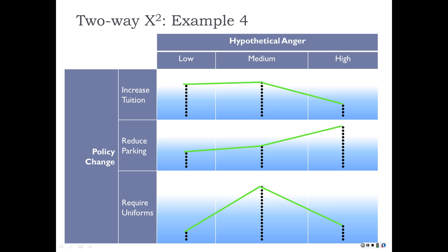The students' hypothetical anger is associated with the policy change being suggested. If there were no association, we would expect the lines connecting the tops of the bars to be perfectly parallel—same zigzag pattern across all conditions. The chi-square independence test is essentially a test of how non-parallel those lines are. They have to deviate from parallel by a sufficient amount before we conclude the non-parallelness also exists in the population, not just in our sample.